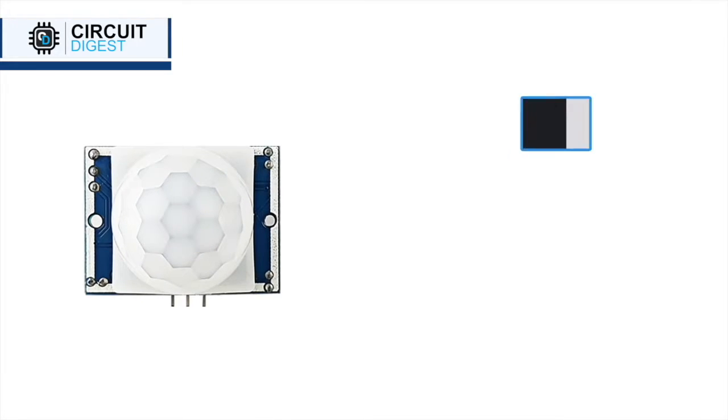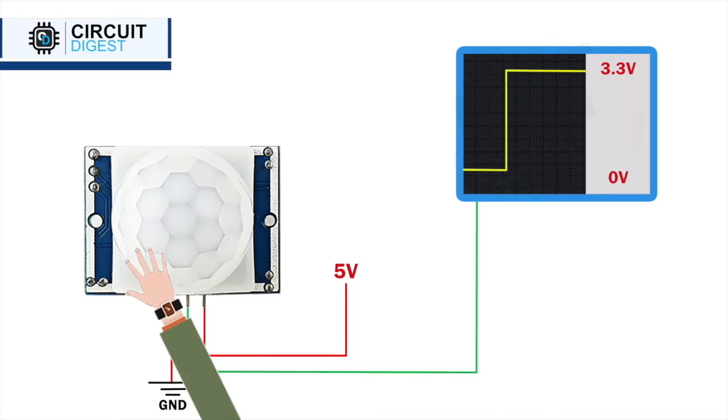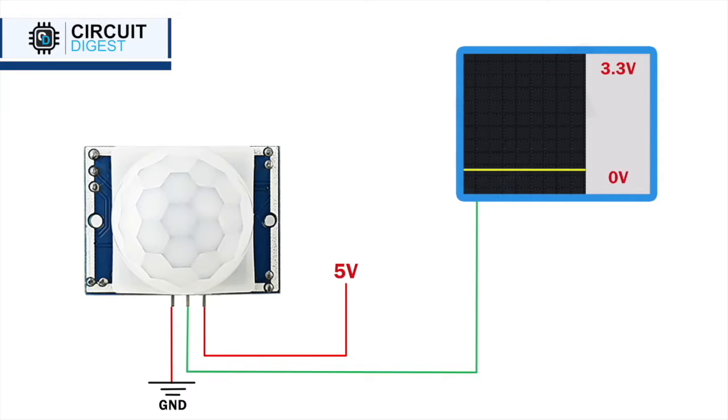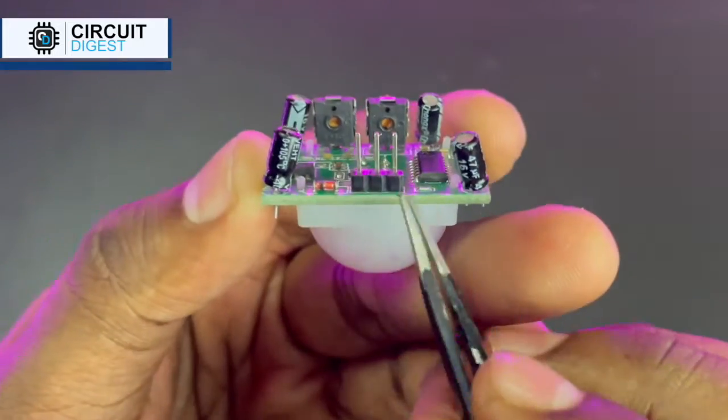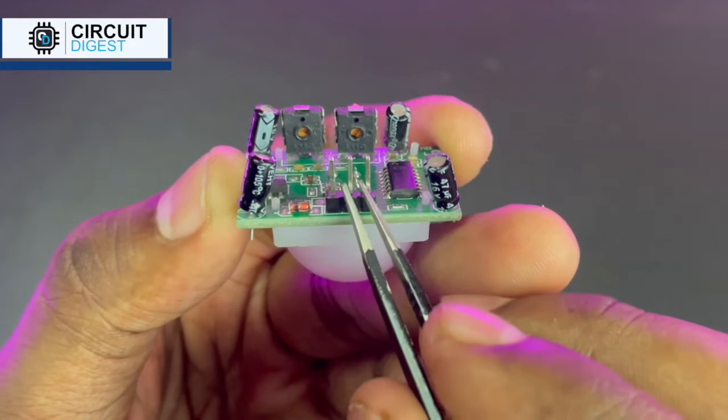Let's begin by understanding the fundamentals of the PIR sensor. The PIR sensor is designed to detect changes in infrared radiation in its field of view, making it an ideal component for motion detection applications. On the PIR sensor module, you will find three pins: VCC, Ground and the Signal Output Pin.